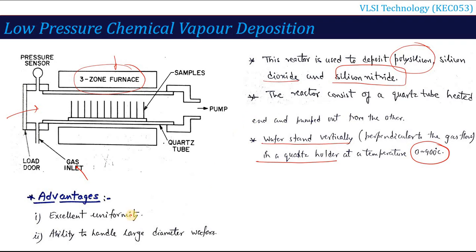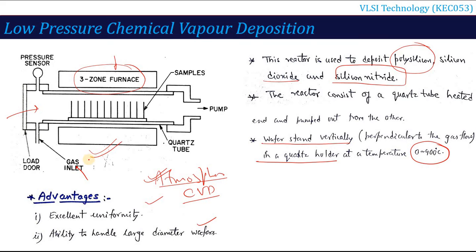Now, what are the advantages of this method? Compared to atmospheric pressure CVD, we get very good uniformity, meaning the deposited layer has equal thickness on all sides. It also has the ability to handle large diameter wafers. Another advantage, as the name implies, is that this is a low pressure reactor, so there is no high pressure maintenance requirement.